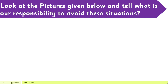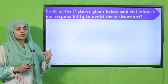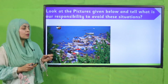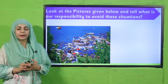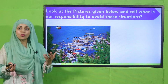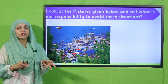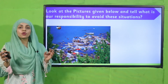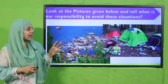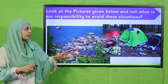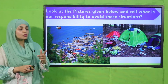Now it is time for an activity. Look at the pictures given below and tell me what our responsibility is to avoid these situations. I will show you some pictures and you have to tell me how we can avoid them. For example, here you can see water pollution — what is your responsibility as a good citizen? Whenever you go out for a picnic, never throw your garbage in water or leave it open; throw it in a dustbin. Always properly dispose of your waste.